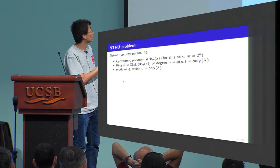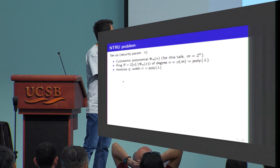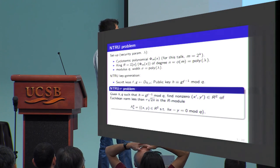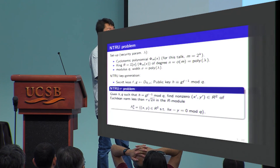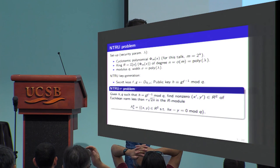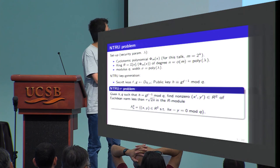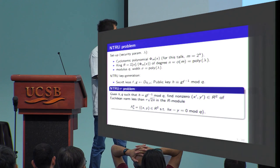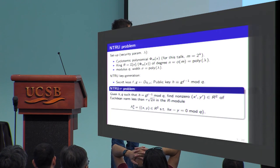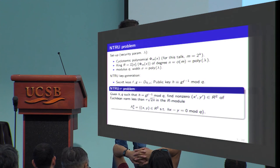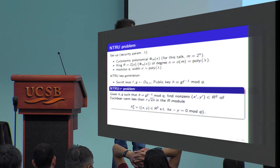In NTRU key generation we start with two secret keys f and g, generated from the ring according to some distribution where the size of f and g are controlled by the parameter sigma. For the public key we generate this by taking the reciprocal of two polynomials mod Q. The NTRU problem parameterized by tau is: given public key h and modulus Q such that h is a reciprocal of two secret polynomials, find the non-zero vector in the R-module of Euclidean norm smaller than some bound that is a function of tau. Clearly f and g are in this R-module, and it turns out this R-module is also a lattice.